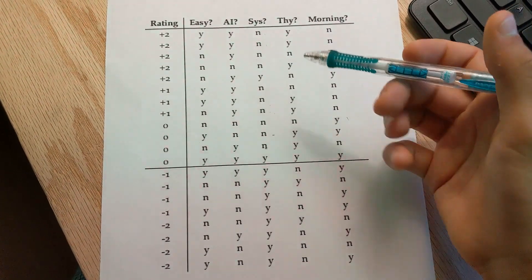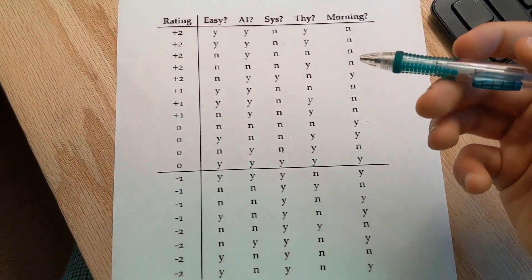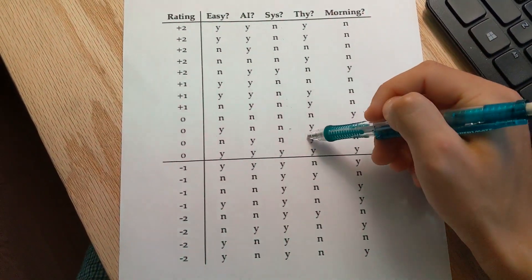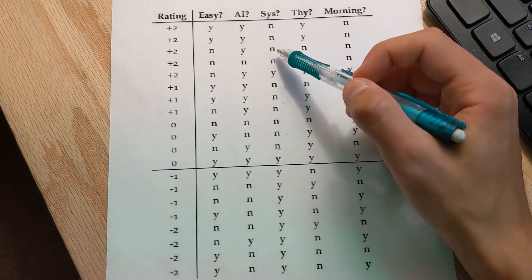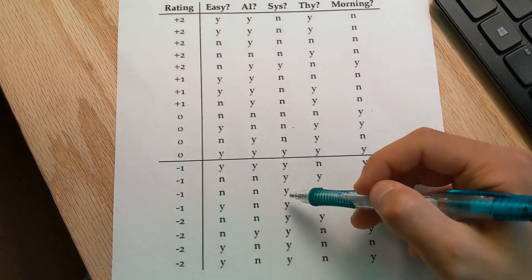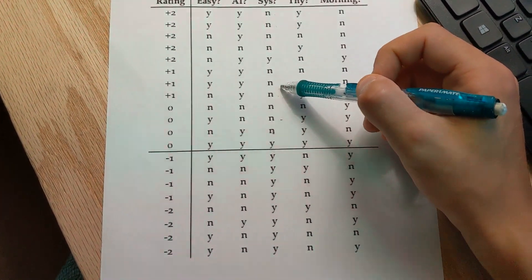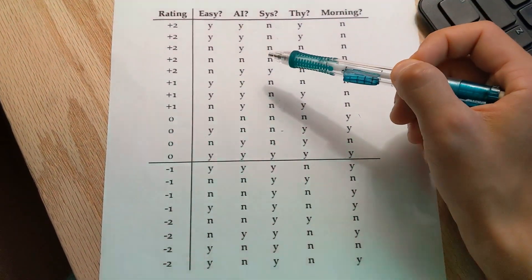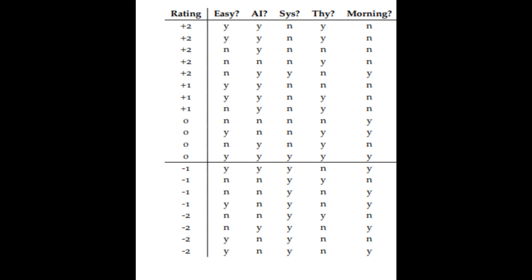To figure out which question to ask first, we score each question. A higher score means asking this question gets us closer to making a prediction — that's equivalent to this question splitting the data more than other questions. For example, the systems class is the best question to ask. If you ask whether a class is a systems class and the answer is no, all the no answers are in the positive rating section — so you can immediately predict that students liked the class. Apparently no one likes systems classes.